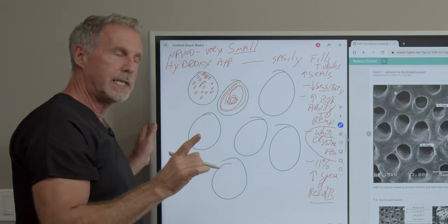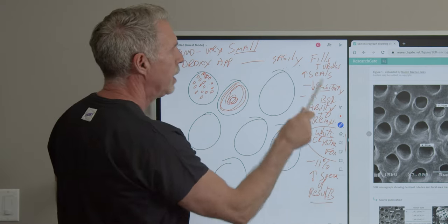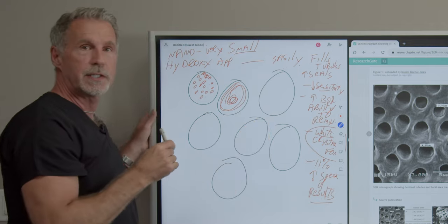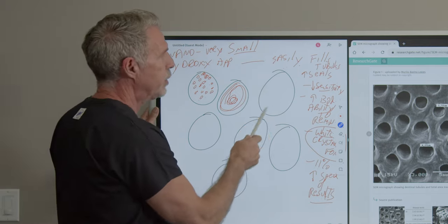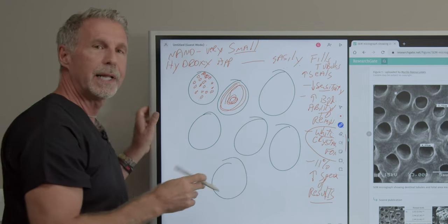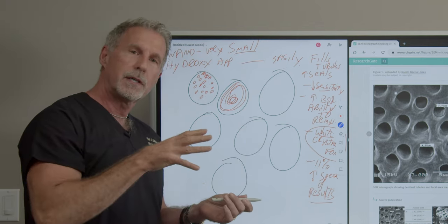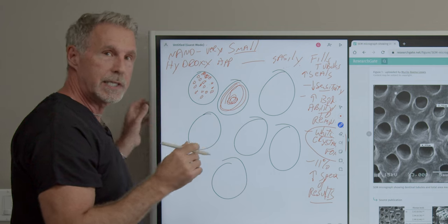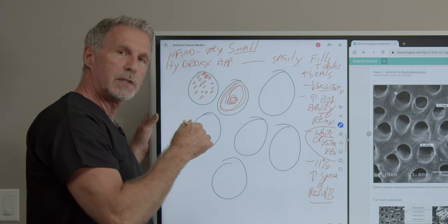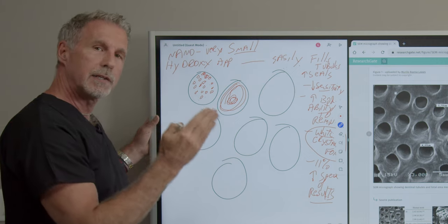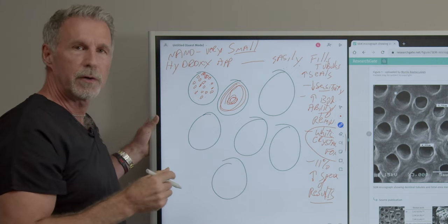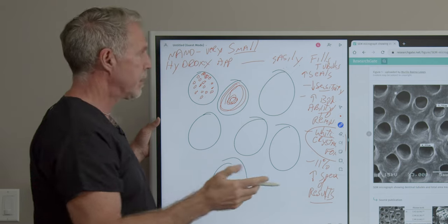And then what should we see takes place when that happens? Well, we should see a decrease in sensitivity, which we do, and we should see an increase in the body's ability to remineralize that area, which we can see, and we have studies based on the independent studies of the nano-hydroxyapatite forms that they're showing that it does lay down a thin layer of remineralized enamel over these areas.